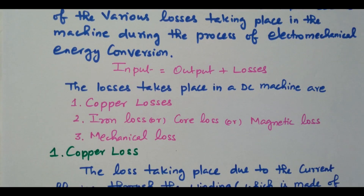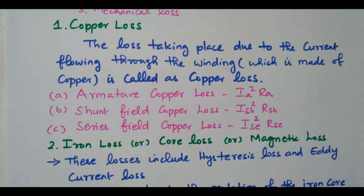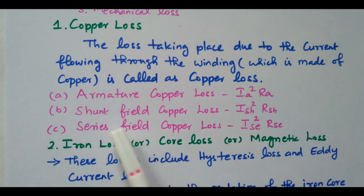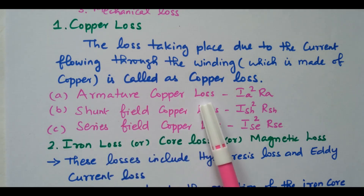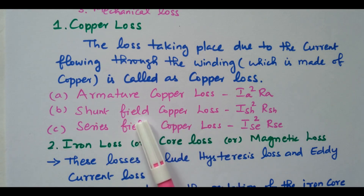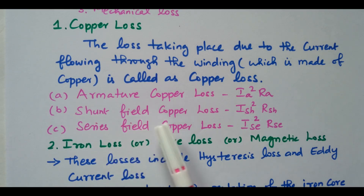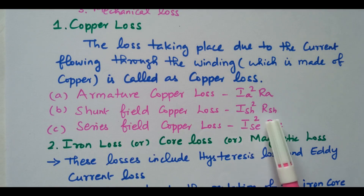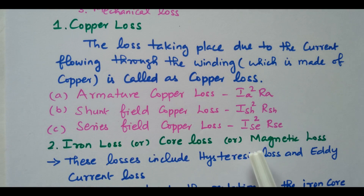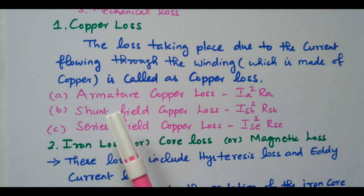Copper loss means loss that happens due to the copper coil — the loss that takes place due to current flowing through the winding. The winding is available in the armature as well as the field. The loss in the armature is called armature copper loss: Ia squared into Ra. The loss in the shunt field copper is shunt field copper loss: Ish squared into Rsh. The loss in the series field is called series field copper loss.